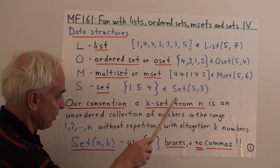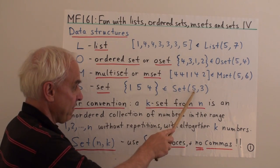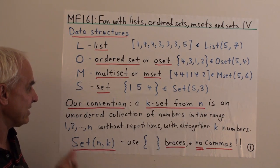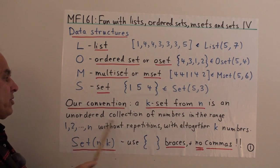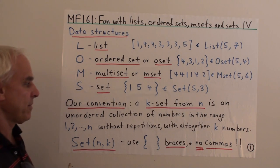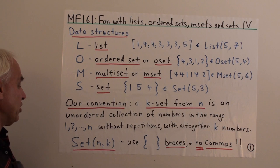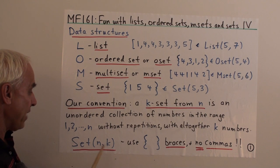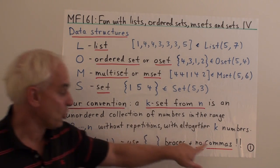For example, an element of set is a three-set from five, meaning all elements are chosen from one, two, three, four, five, and there are three elements in total. In general, a k-set from n is an unordered collection of numbers in the range one through n, without repetitions, and with altogether k numbers. This gives us a type of object we'll denote by set(n, k), using braces and no commas.